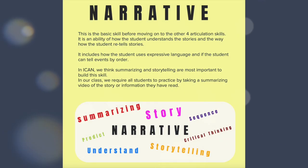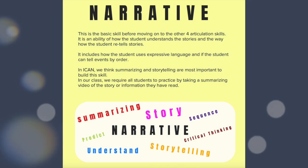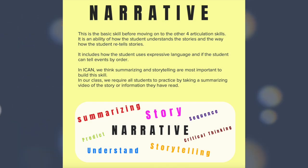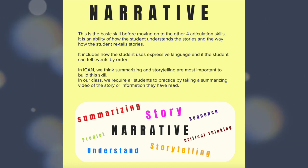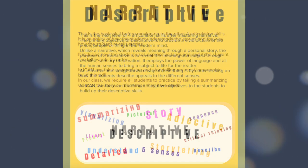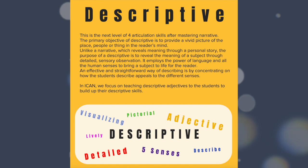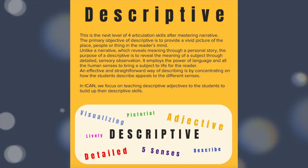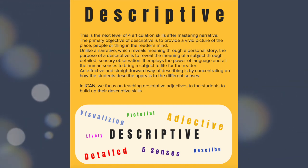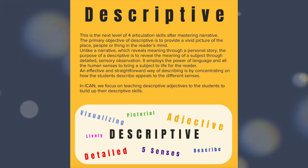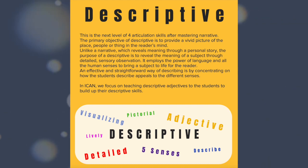Narrative: it is the ability of how the student understands stories and the way students retell stories. Descriptive: the primary objective of descriptive writing is to provide a vivid picture of a place, picture, or thing in the reader's mind.